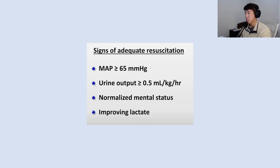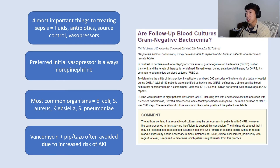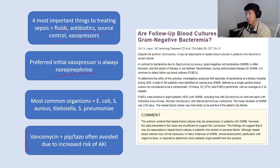Signs of adequate resuscitation include normalized mental status and improving lactate. A common pimp question: what are the four most important things for treating sepsis? The answer is fluids, antibiotics, source control, and vasopressors. The preferred initial vasopressor is always norepinephrine. The most common causative organisms include E. coli, Staph aureus, Klebsiella, and Strep pneumo. Vancomycin plus piperacillin-tazobactam (Zosyn) is sometimes avoided due to increased AKI risk, though this is institution-dependent.